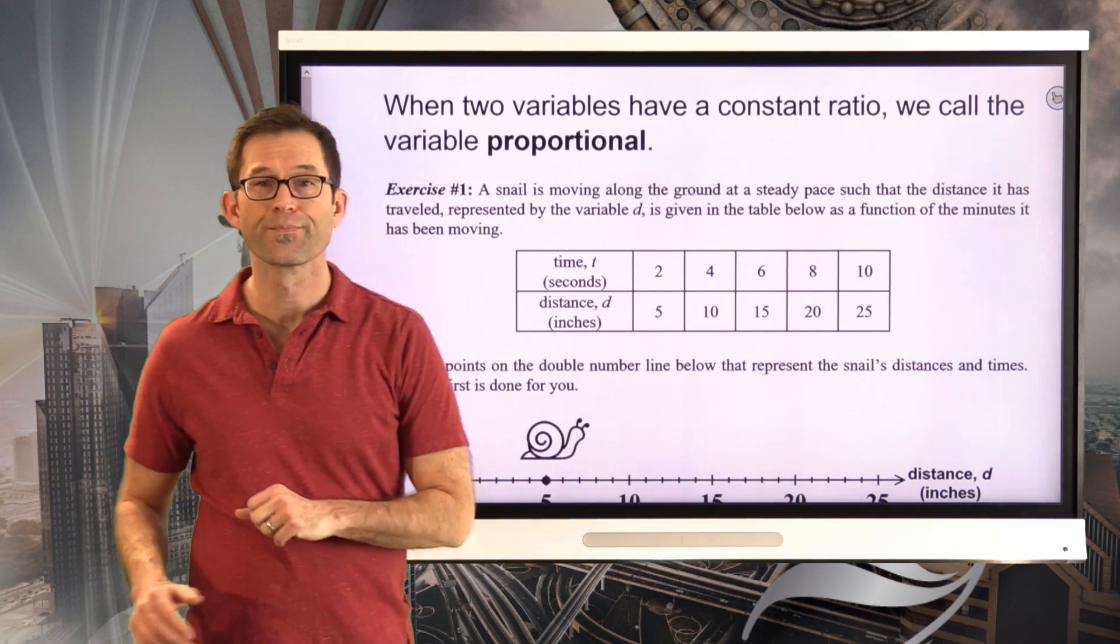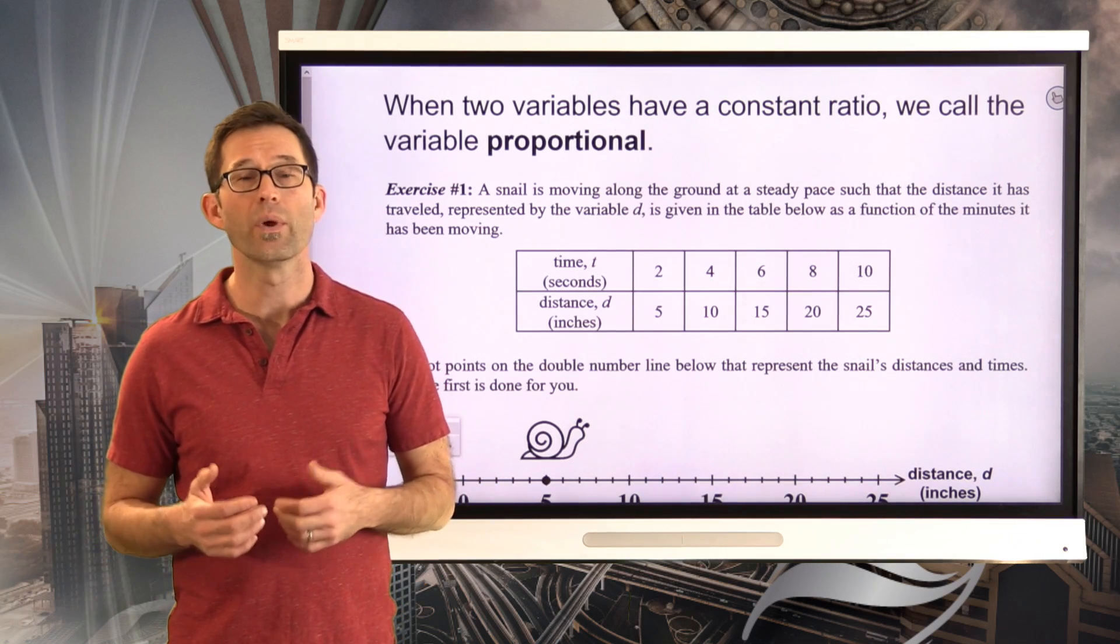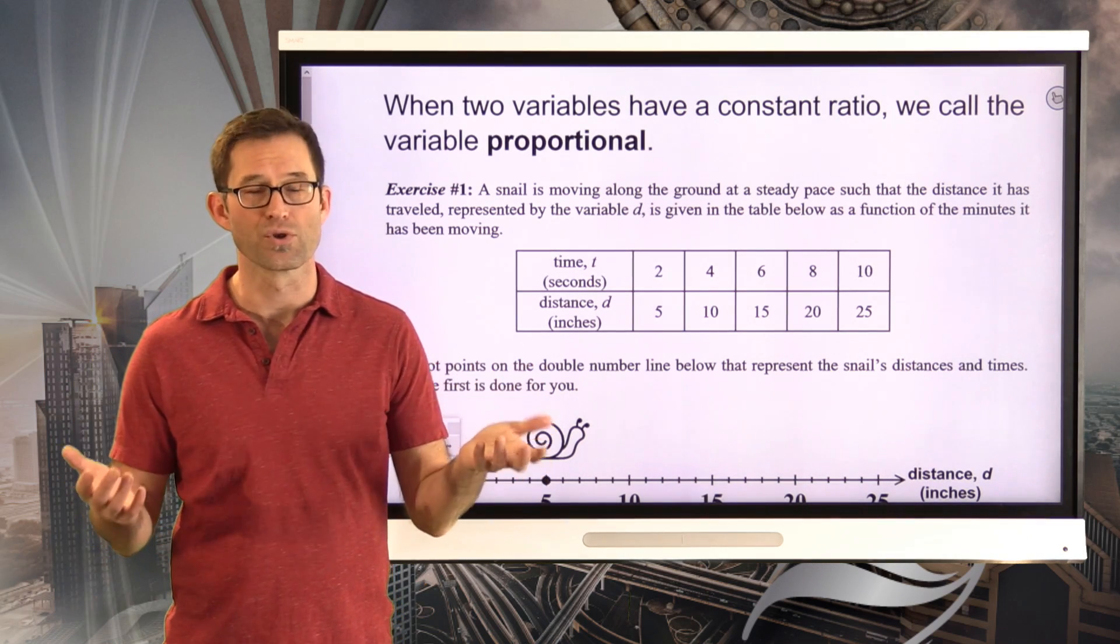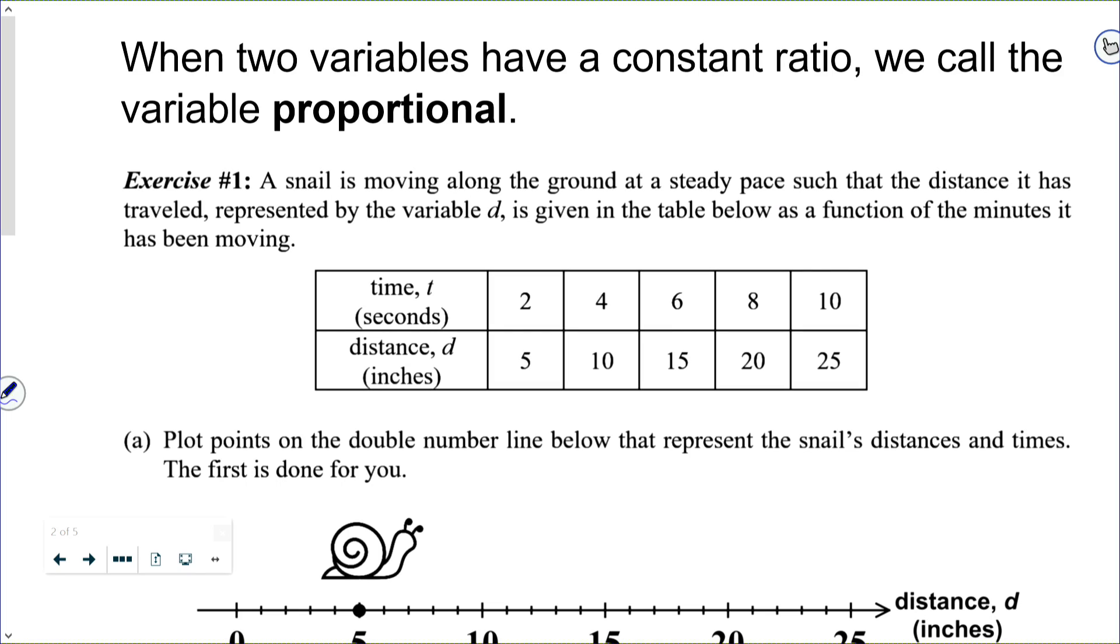When two variables have a constant ratio, we call the variables proportional. Let's take a look at exercise number one. A snail is moving along the ground at a steady pace such that the distance it has traveled, represented by the variable d, is given in the table below as a function of the minutes it has been moving. Letter A simply asks us to plot the points from that table on the double number line below that represent the snail's distances and times where the first one's been done for you.